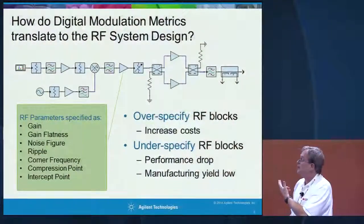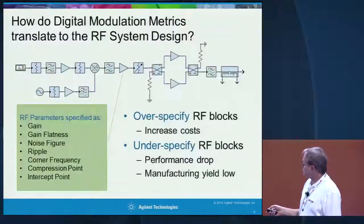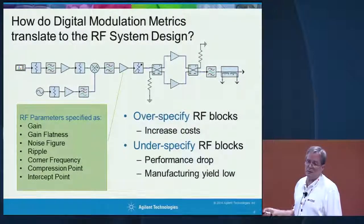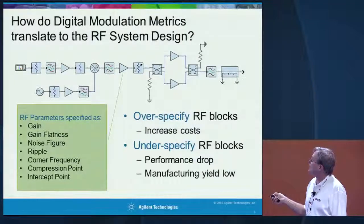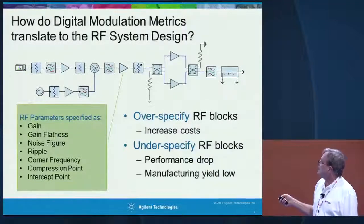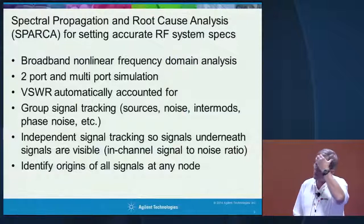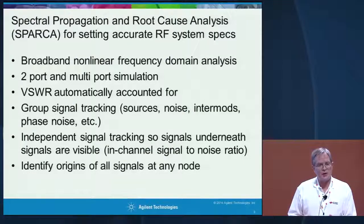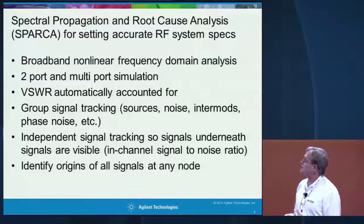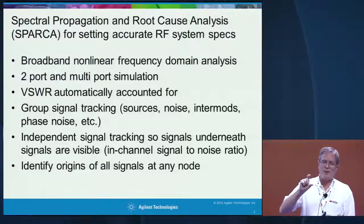How do we take the requirements — EVM, BER, ACPR — and apply them to our RF design? We want to be careful not to over-specify our blocks, which increases cost, or under-specify. We have a simulation technique in our RF architecture tool called SPARCA — Spectral Propagation and Root Cause Analysis. It can measure in-channel signal-to-intermod ratio, in-channel signal-to-noise ratio, and phase noise ratio.